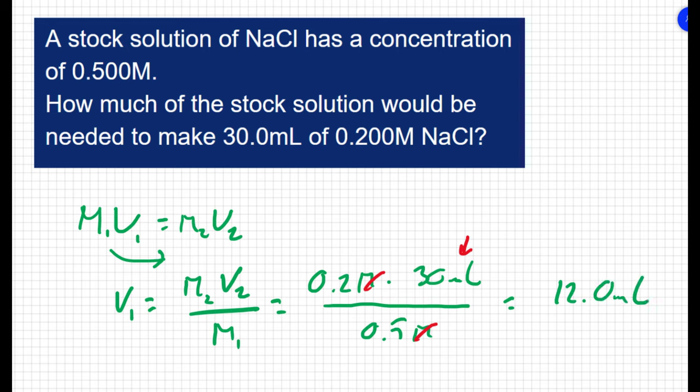So what that means is if I go into the stock room, I can get 12 milliliters of my 0.5 molar solution. If I then dilute that to a new volume of 30 milliliters, basically add 18 milliliters of water, then I'll end up with 30 milliliters of a 0.2 molar solution of sodium chloride.